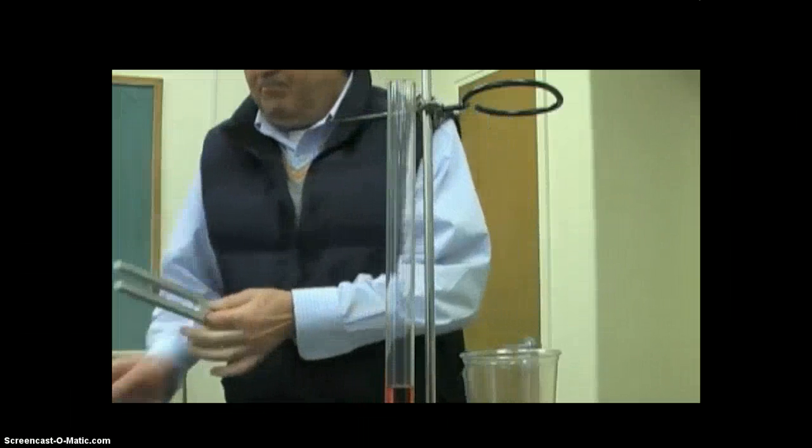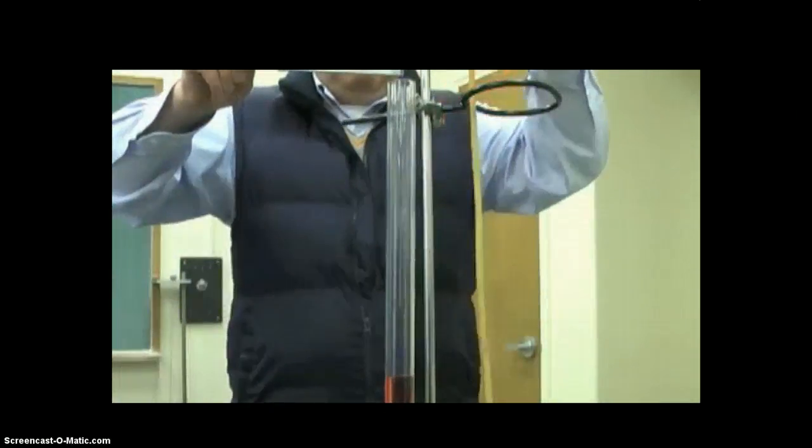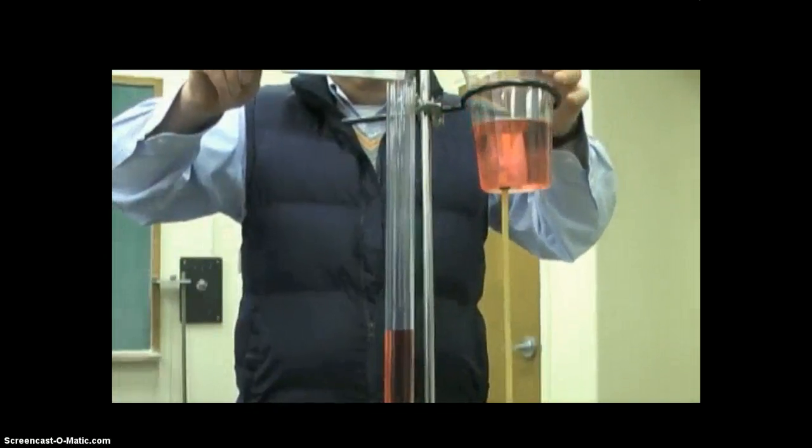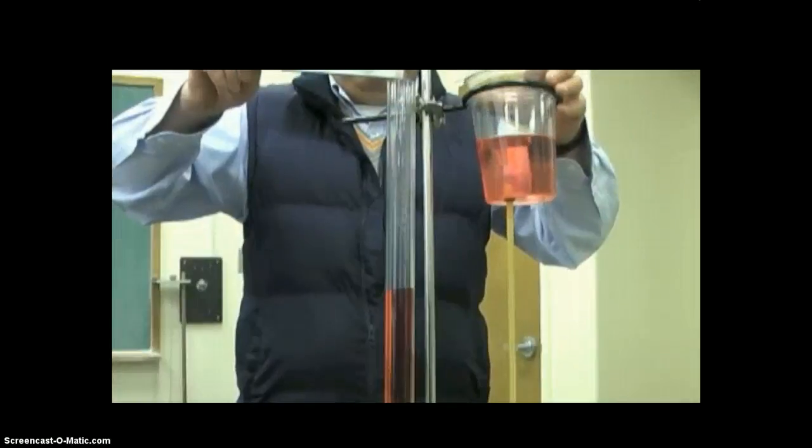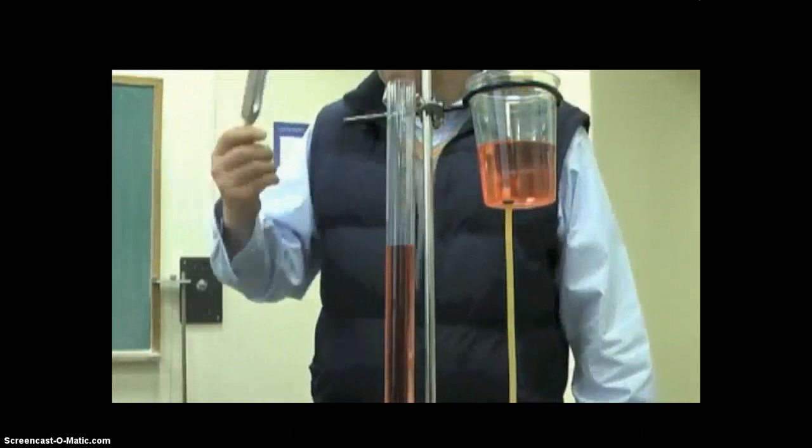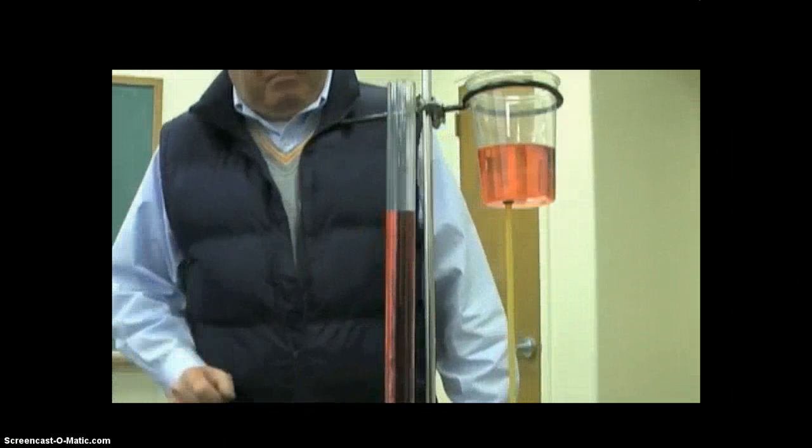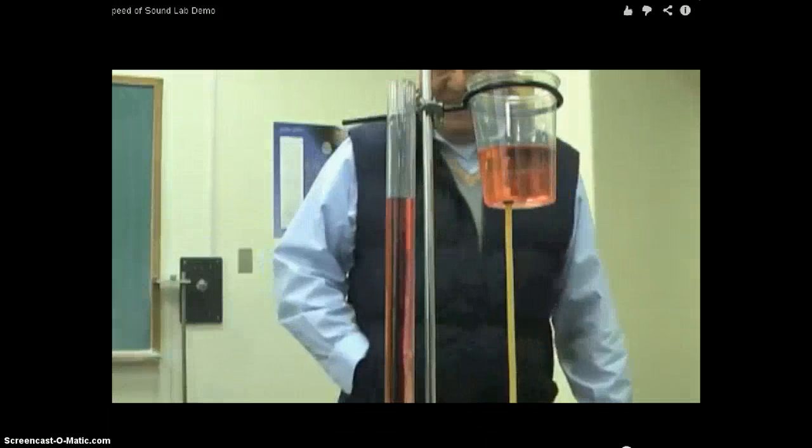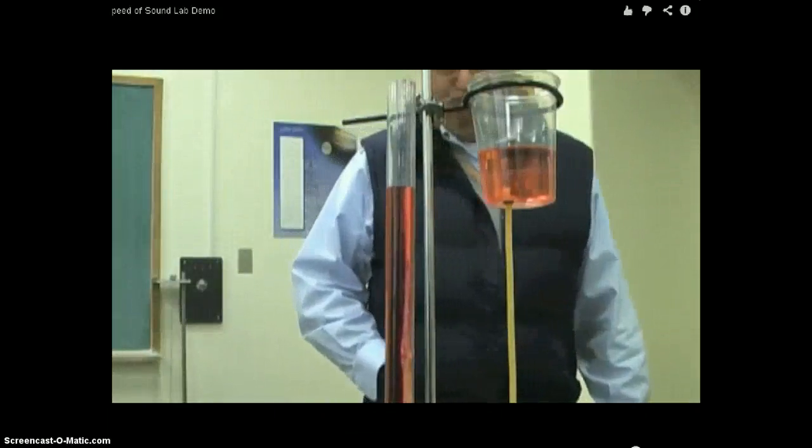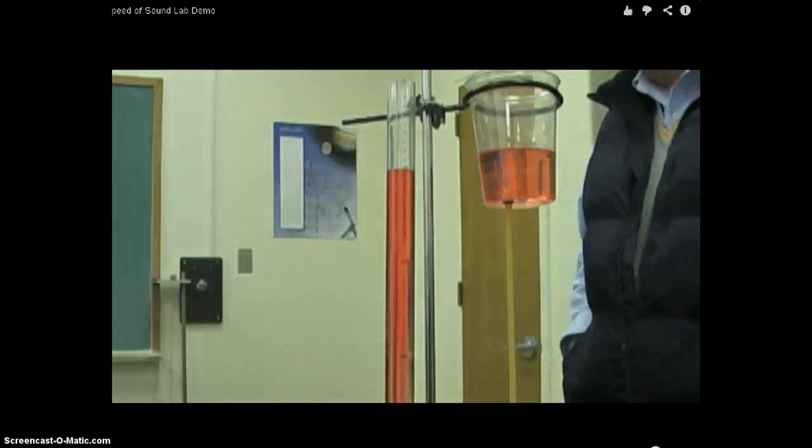And we'll try it again going the other way just to show that off again. So there you go. You can hear a marked increase in the volume. So based on the height of the column where you get the resonance frequency, and the known frequency, which we derived from the actual marked value on the tuning fork, we're able to do a calculation of the speed of sound. We'll leave that to you. Thanks.